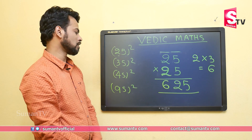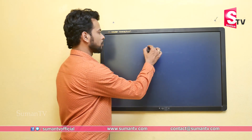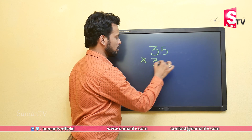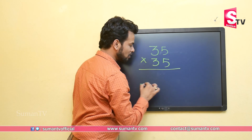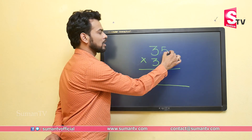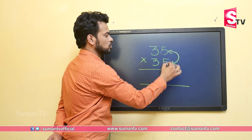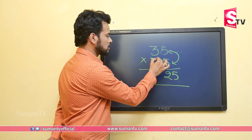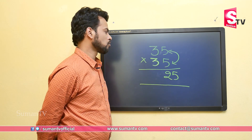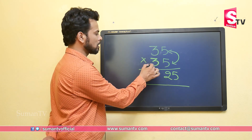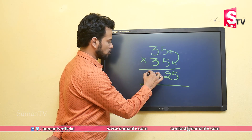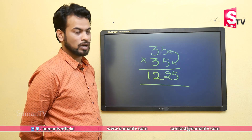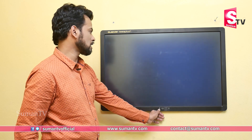Let's take another example: 35 multiplied by 35. First, multiply unit with unit — 5 multiplied by 5 is 25. The tens digit is 3, and the successor of 3 is 4, so we multiply 3 with 4 to get 12. Therefore 35 multiplied by 35 is 1225.